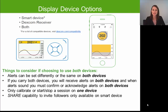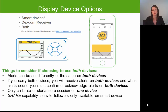One of the most exciting new features of the Dexcom G5 system is that you now have the ability to use two different types of display devices. You can use the Dexcom receiver that came with your system, a compatible smart device, or a combination of both at the same exact time. You can also interchange between the two devices — for example, you could use your smart device during the day and your receiver at night, or vice versa.